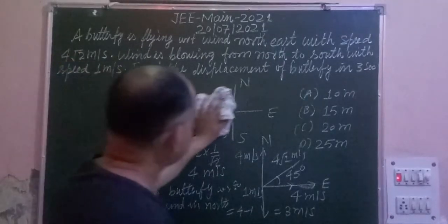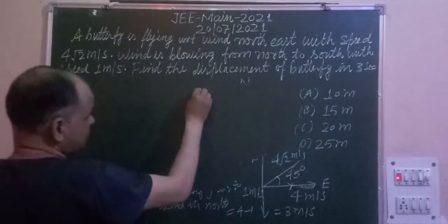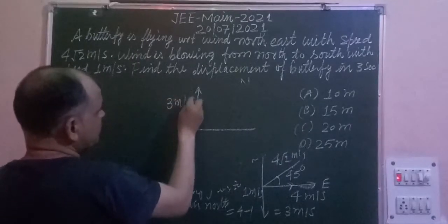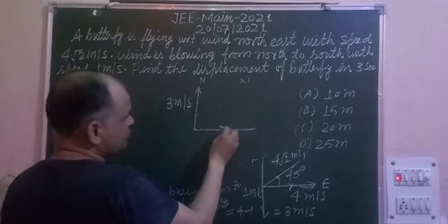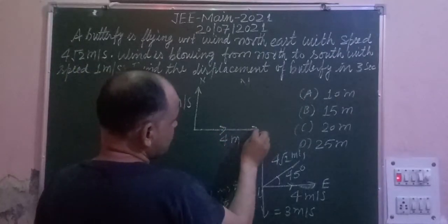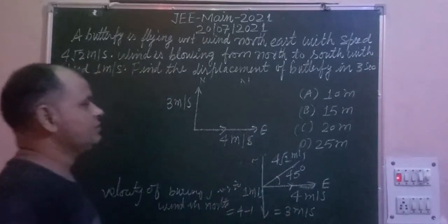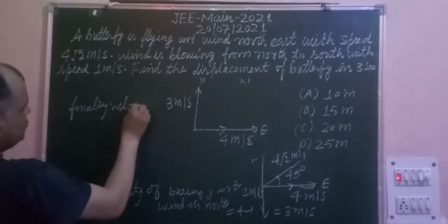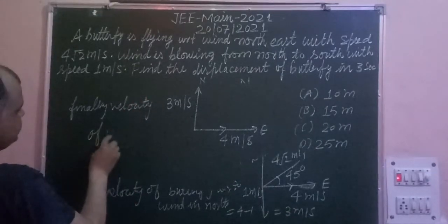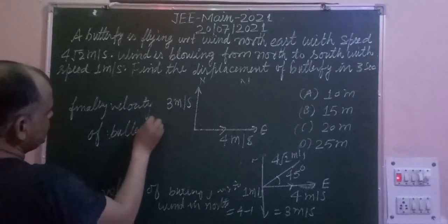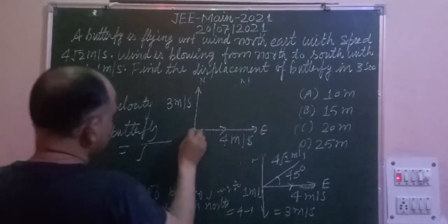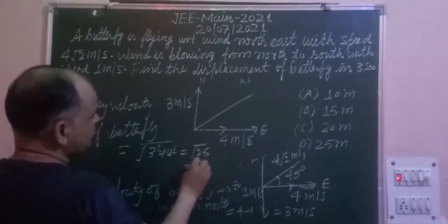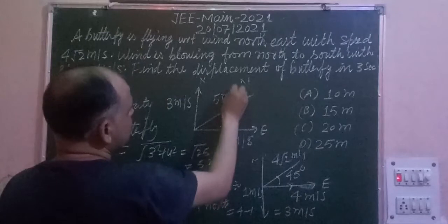Finally we have a figure: the velocity of the butterfly in the North direction with respect to wind is 3 meters per second, and the velocity of the butterfly in the East direction is 4 meters per second. So the resultant velocity of the butterfly equals √(3² + 4²) = √25 = 5 meters per second.